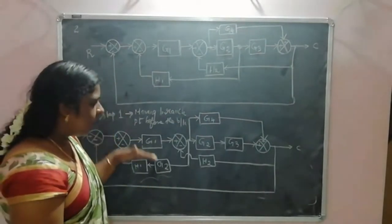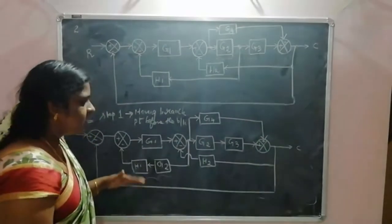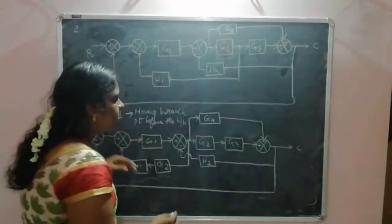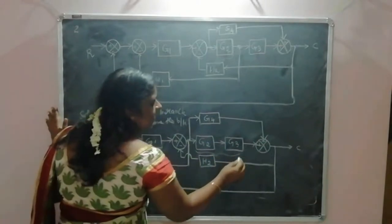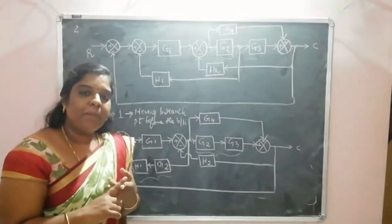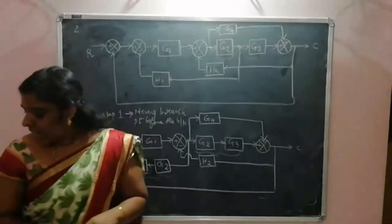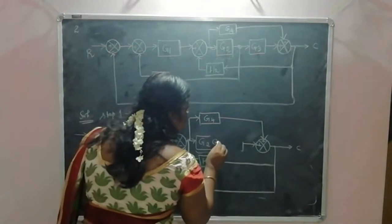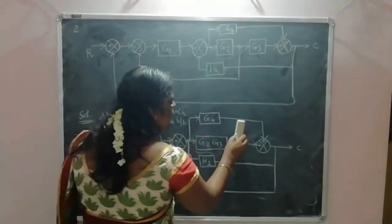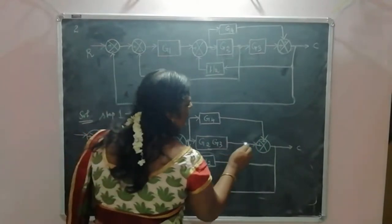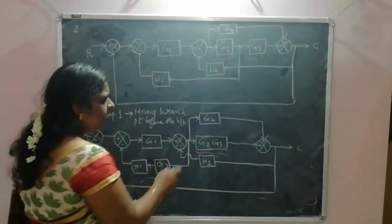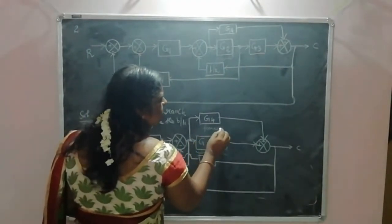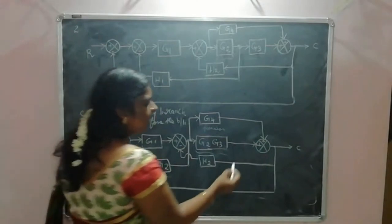So we have redrawn the block diagram. Now we can see that on this side we have two blocks connected in cascade. If two blocks are connected in cascade, we can multiply those two gains. So we are multiplying G2 into G3, eliminating the two individual blocks into a single block. Next, we can see a branch point connected to a gain forming a forward path.